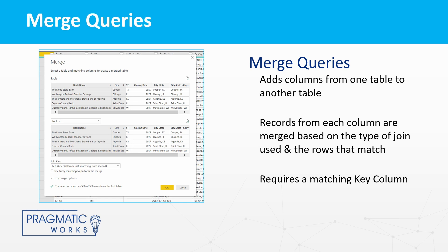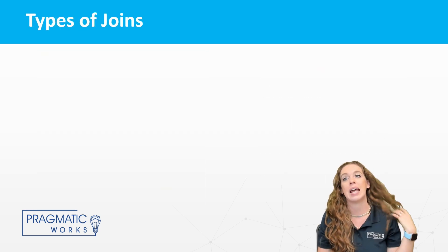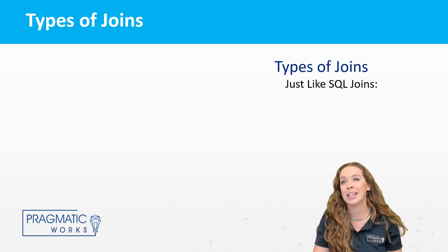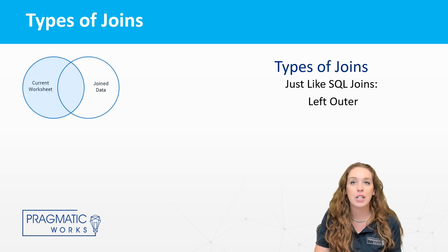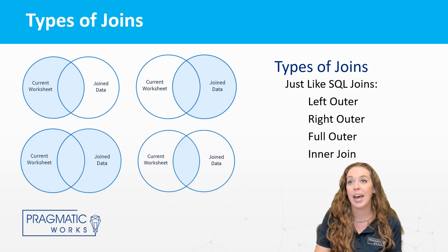When we're doing a merge, a few things to consider. First off, what type of join are we going to do? And also, do we have at least one column that has the same content? It could be different amounts of that content, but we need to have the same content in one column on each table. Now, when we're looking at these join types, let's go over the different varieties. If you know SQL, these are really similar. We can have a left outer, a right outer, a full outer, and inner join.